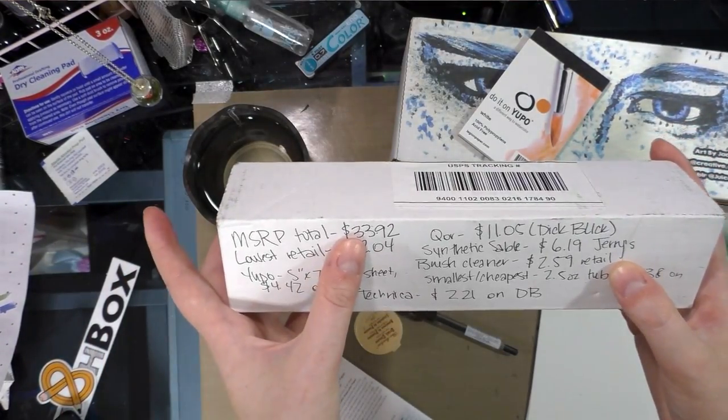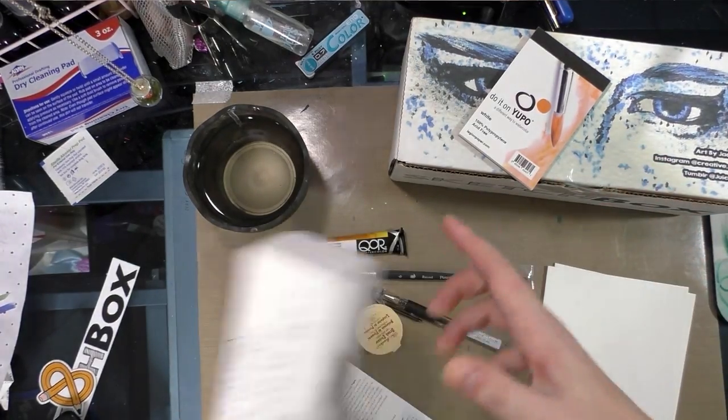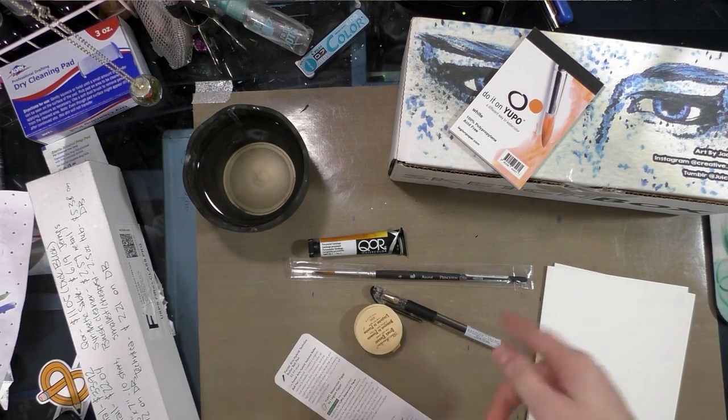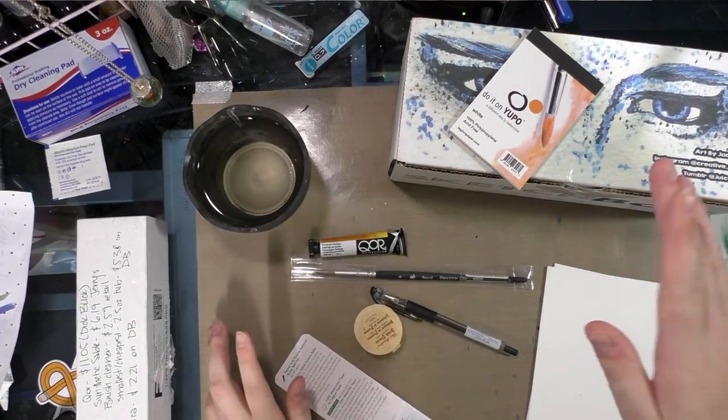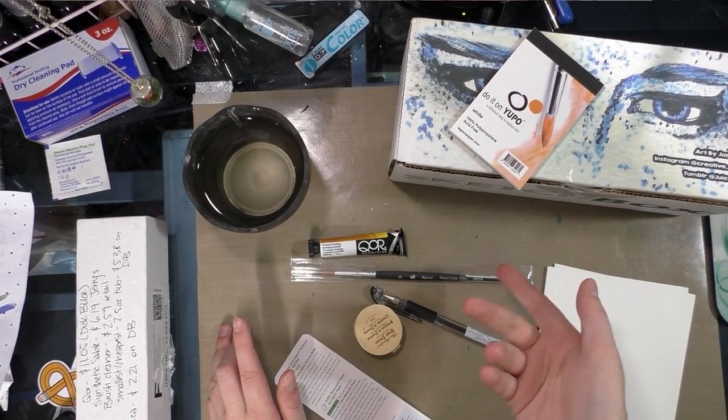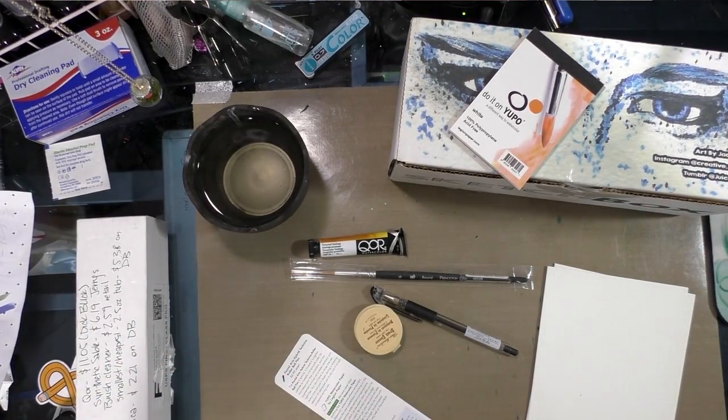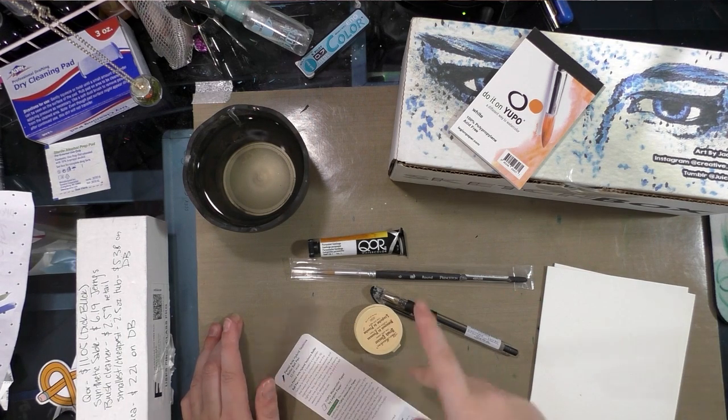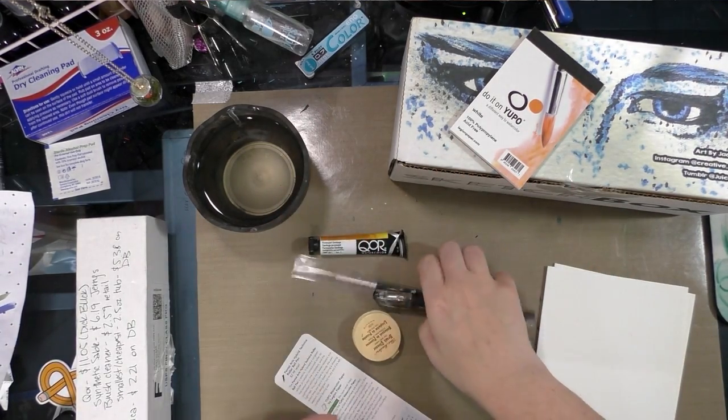The Technica pen is $2.99 MSRP and $2.21 on Dick Blick. The Yupo is a bonus item so there isn't a charge for this. Our MSRP total is $33.92. Our lowest retail total excluding the Yupo is $22.04. You pay $20 to get this box shipped to you flat if you live in the U.S. So even with the lowest MSRP, ArtSnacks is still ahead of the curve this month. I usually want the box to be worth at least $5 less than what I pay. ArtSnacks keeps coming in above, so that's awesome.